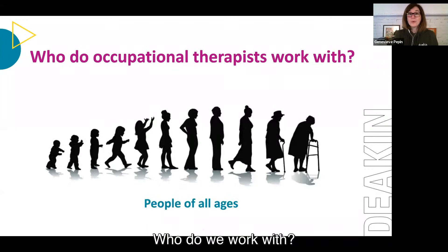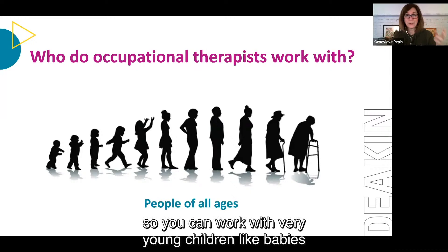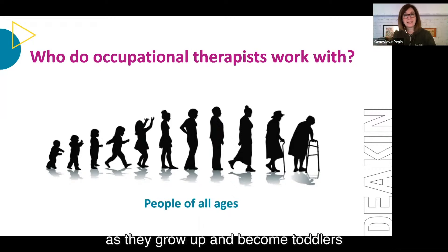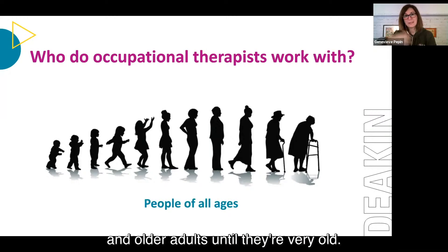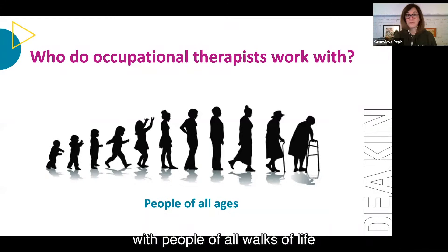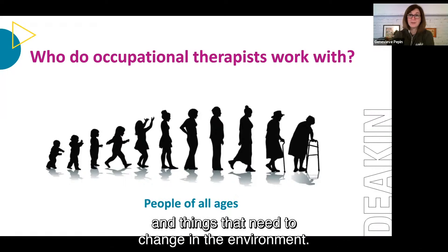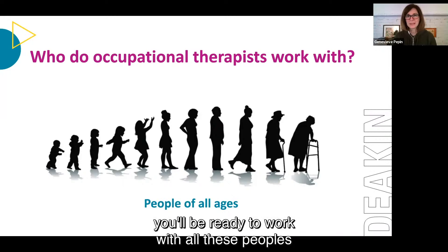Who do we work with? Everybody — simple. We work with people of all ages across the lifespan, from babies and toddlers through to children, adolescents, young adults and older adults. As a Deakin OT, you are trained to work across the lifespan with people of all walks of life presenting with different conditions: trauma, disability, illnesses, developmental delay, issues related to aging, and environmental barriers.